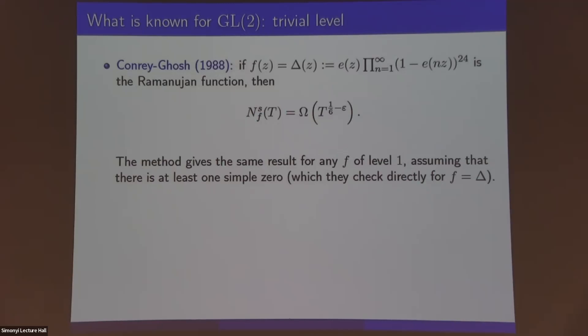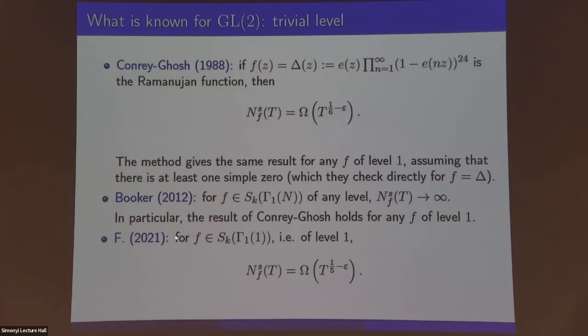That was the state of things until a breakthrough of Booker from 2012, when he showed that for any holomorphic form of any level, there is at least one simple zero. In fact, he gets infinitely many simple zeros. So in particular, in the case of level one, there is at least one simple zero. So you can run the argument of Conrey and Ghosh and get this quantitative bound right here. For forms of level one, you get omega of T to the one-sixth, simple zeros. Newform always, yes. And so I recently improved these results to omega of T to the one-fifth in the case of level one. So we have reasonable quantitative results if the level is one.